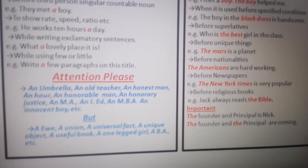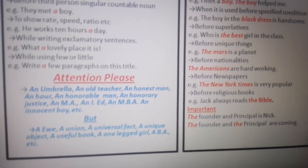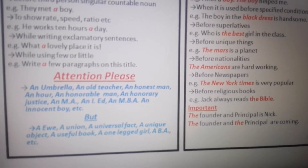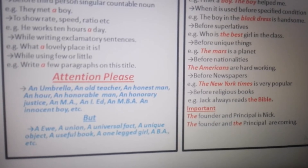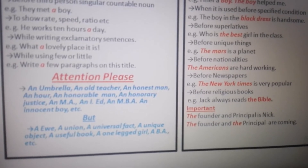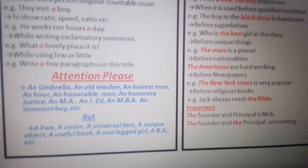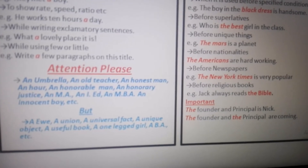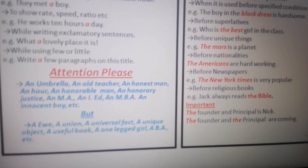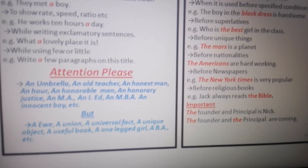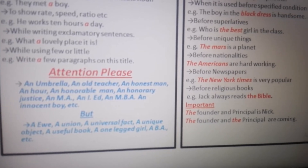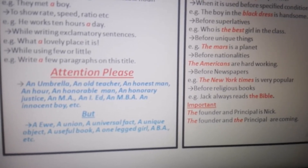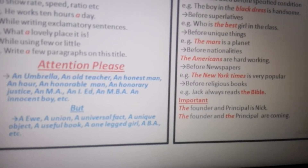A useful book — 'u' is used but does not produce a vowel sound, that is why 'a' is used before 'useful'. A one-legged girl — even if there is a letter 'o', it doesn't produce a vowel sound, that's why 'a' is used there. A BA, a B, etc. — 'b' does not produce a vowel sound, that is why 'a' is used there.